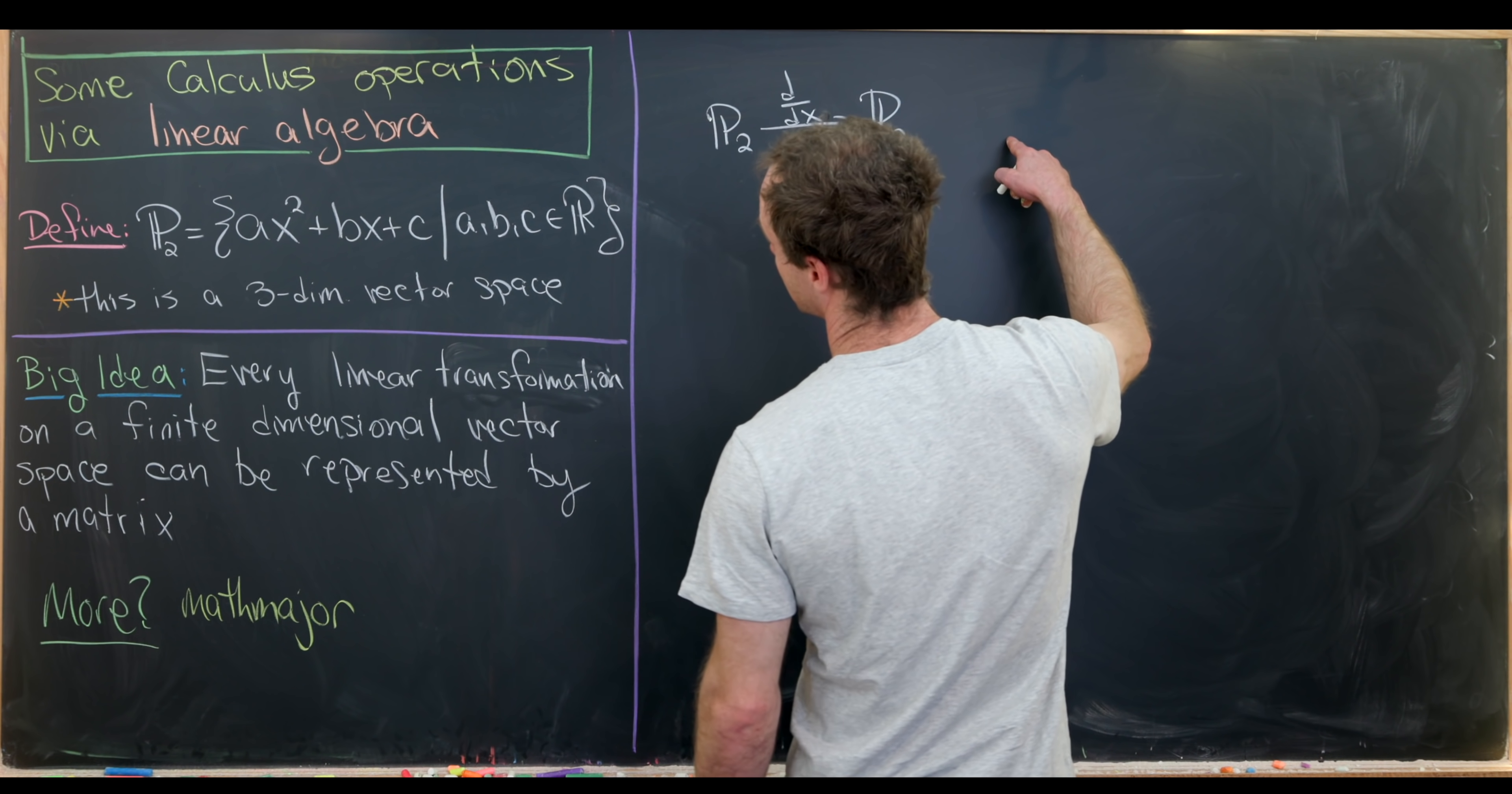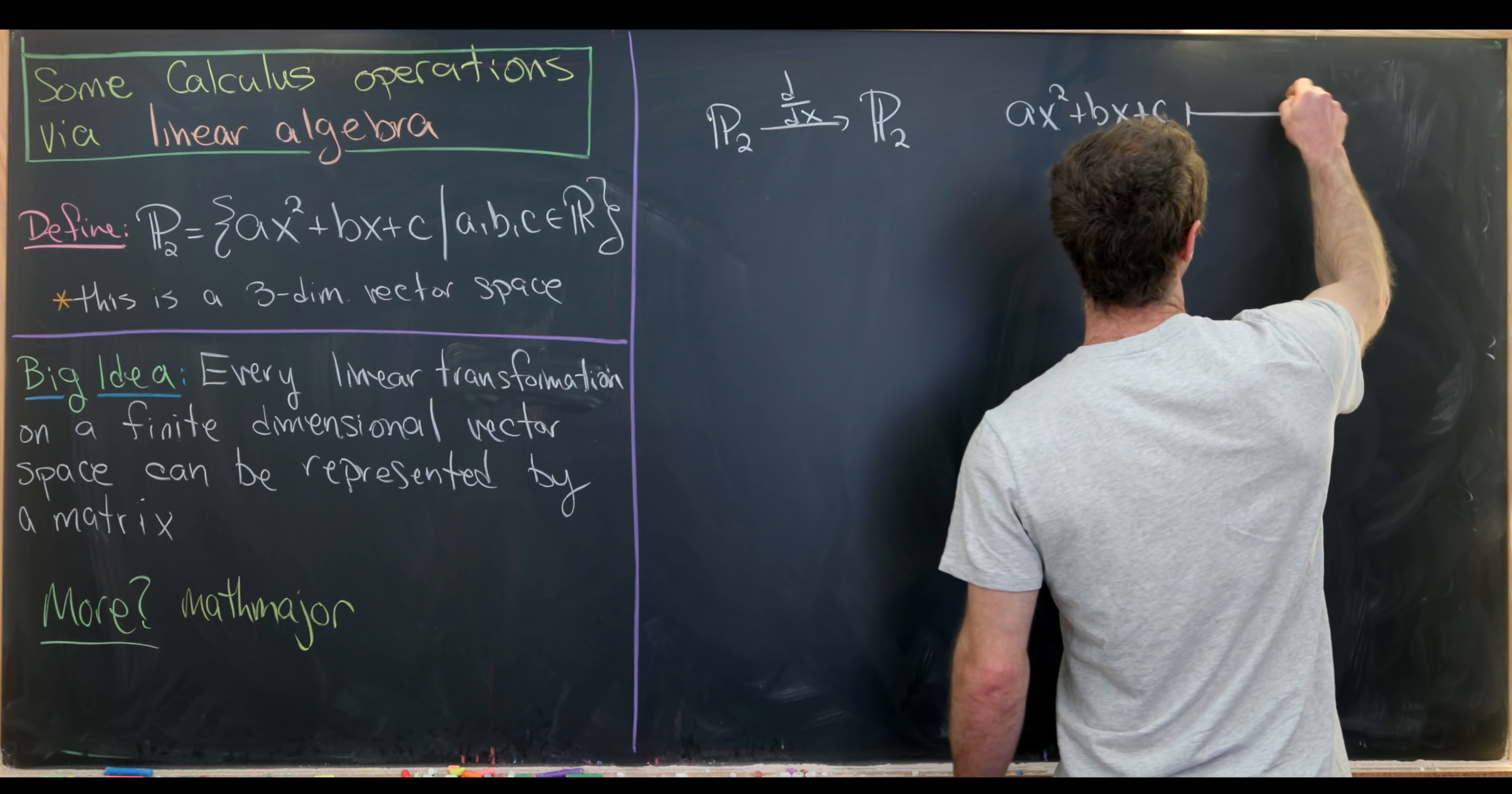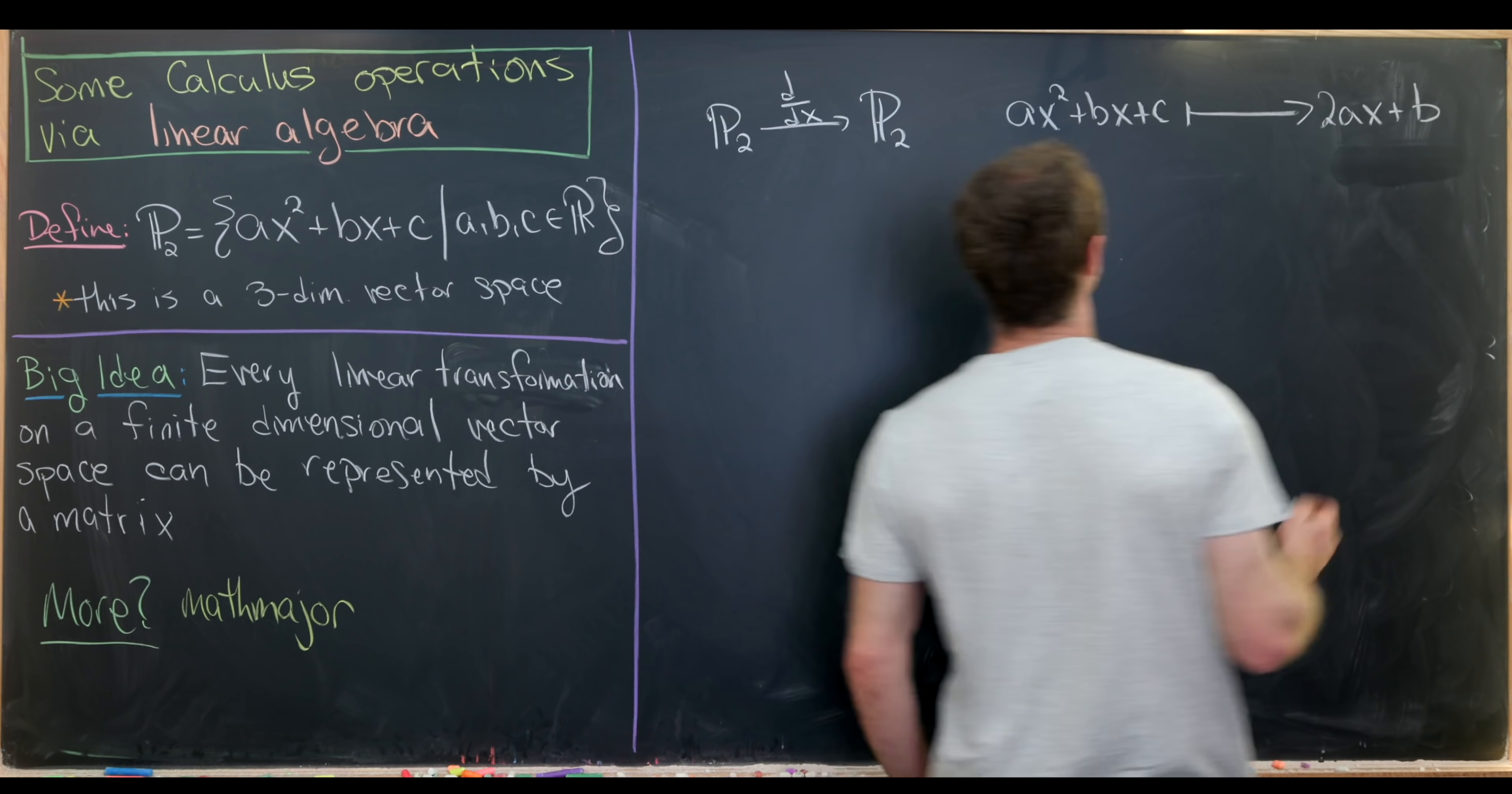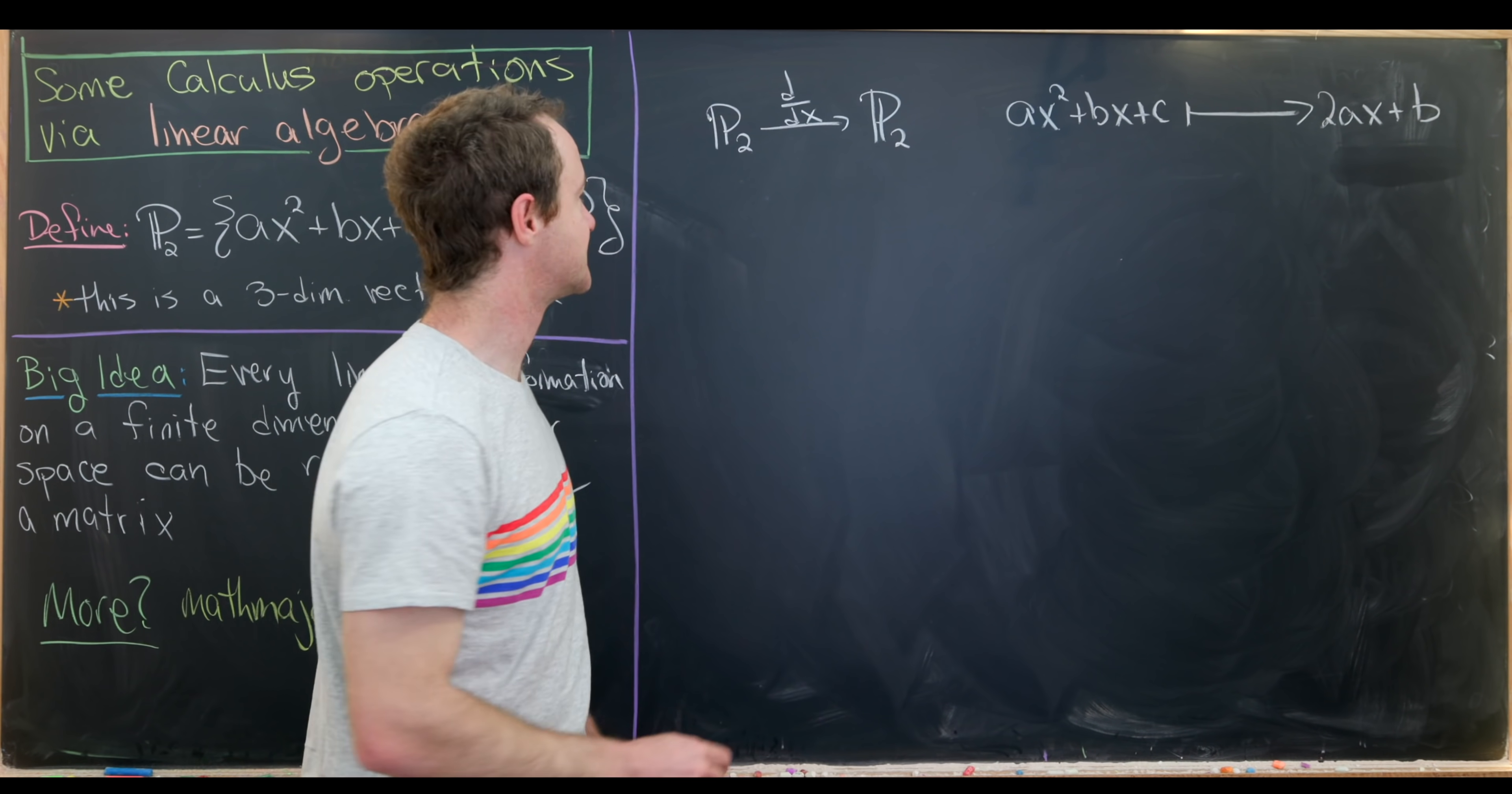An arbitrary element in P2, like we've written over there, is ax squared plus bx plus c. Now, what does the derivative do to that? Well, I think we all probably know the derivative rules as they're applied to polynomials. So this gives us 2a times x plus b, just using the power rule. Next up, we'd like to use this little fact that P2 is a three-dimensional vector space.